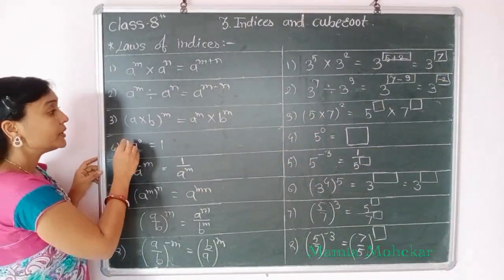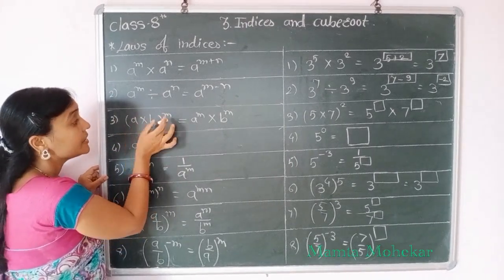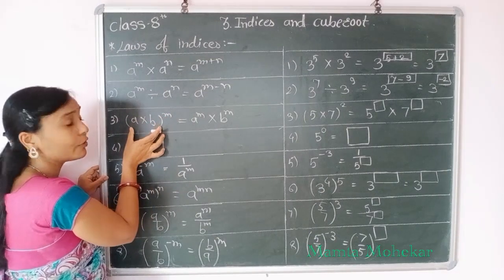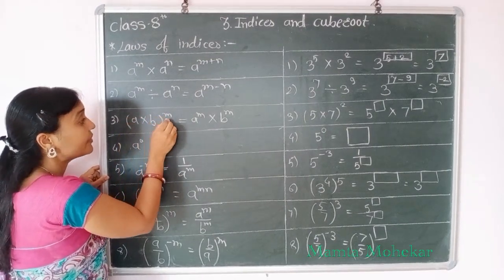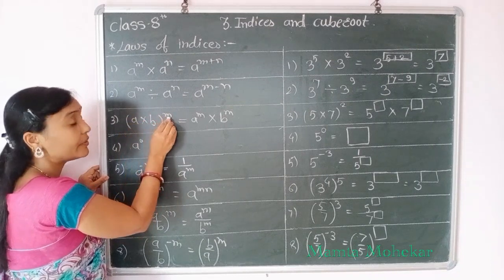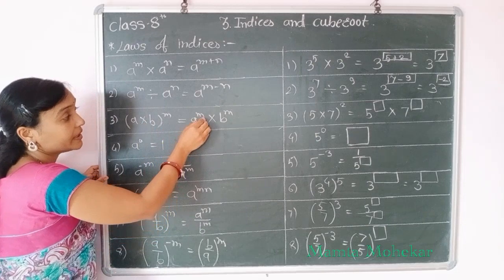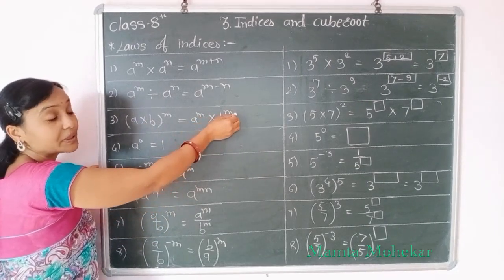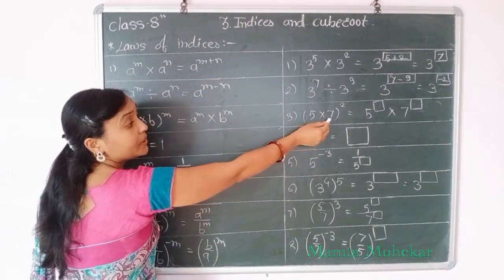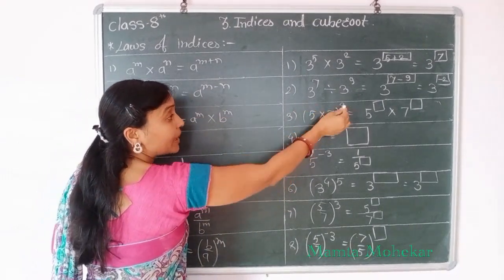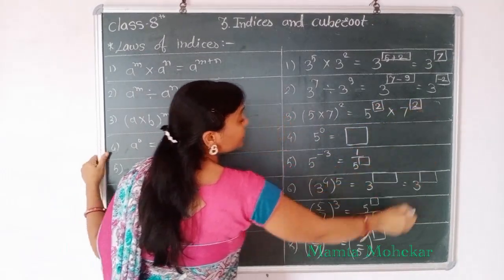Now the third rule is: A into B, bracket to the power M. Means this power applies to both inside the brackets. So we write down A raised to power M into B raised to power M. Example: 5 into 7, bracket to the power 2. So 5 is also raised to power 2 and 7 is also raised to power 2.